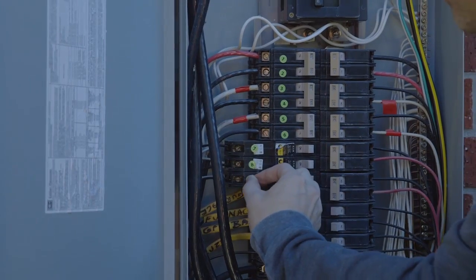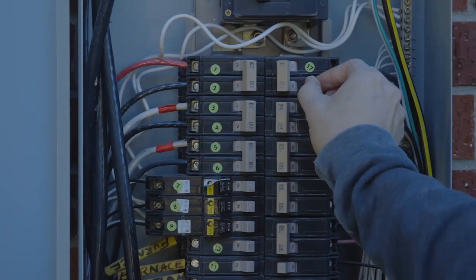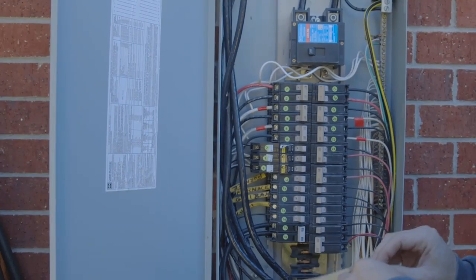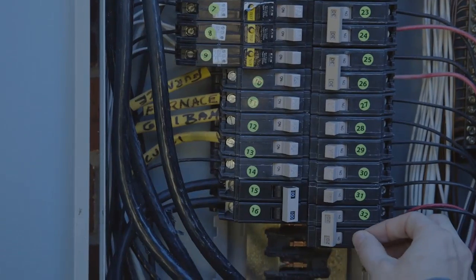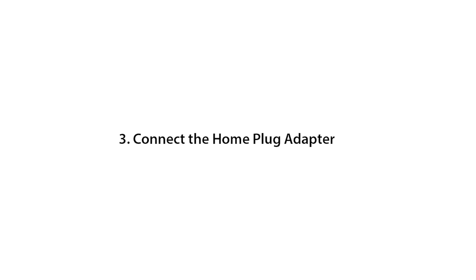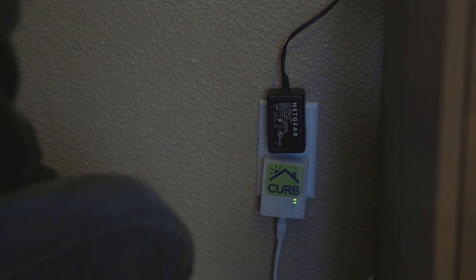You can number the breakers any way you want, but we found it easier to manage later if you first number the left hand breakers top to bottom, then the right hand breakers top to bottom. Check the manual if you need to measure circuits for more than one breaker panel.